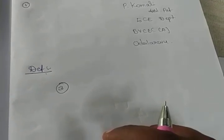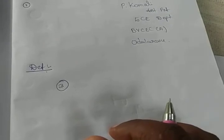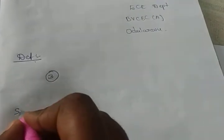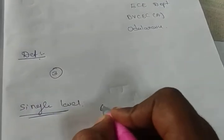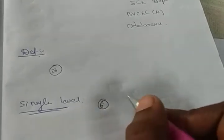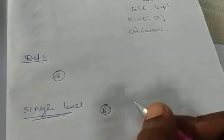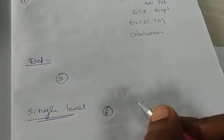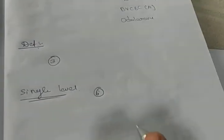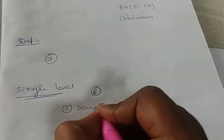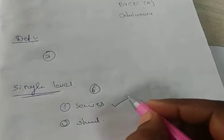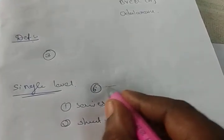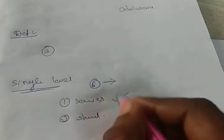In the previous lecture I discussed about all these things. Now I will discuss about single level clippers. In single level clippers we have six types of clipping processes: positive clipping, negative peak clipping, negative peak above reference, negative peak below reference, positive peak above reference, and positive peak below reference. Single level clippers are of two types: series clipper and shunt clipper.